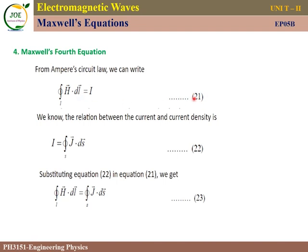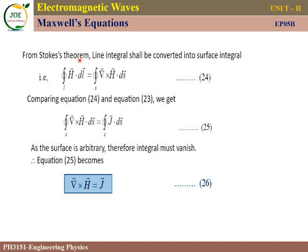Current density J is defined as current per unit area. Therefore, current I = ∬J·dS (surface integral of current density), which is equation 22. Substituting into equation 21 gives ∮H·dL = ∬J·dS, equation 23. Applying Stokes' theorem to the left-hand side and equating the integrands gives: ∇×H = J, which is equation 26.